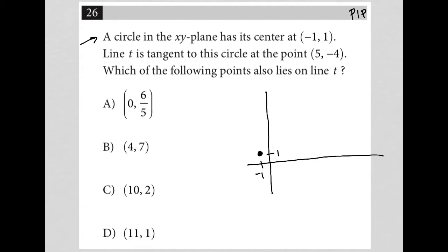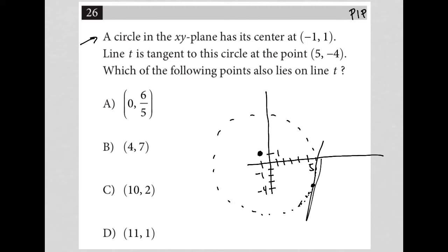Line T is tangent to this circle at the point 5, negative 4. I know that in order for it to be tangent, that means there's a point on the circumference of the circle. So my circle looks something like this, and line T touches right at that point.